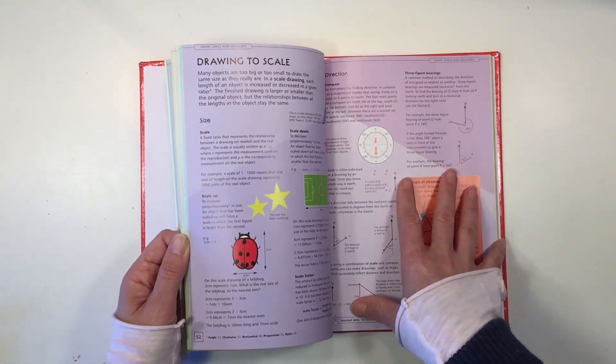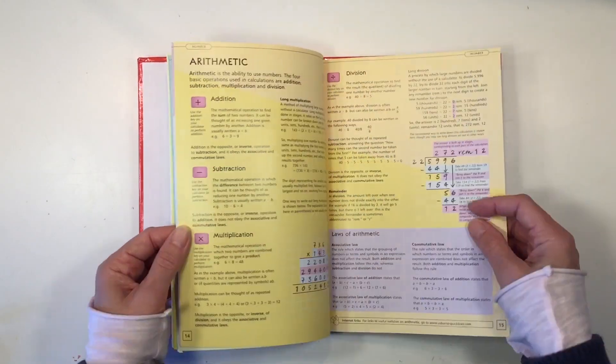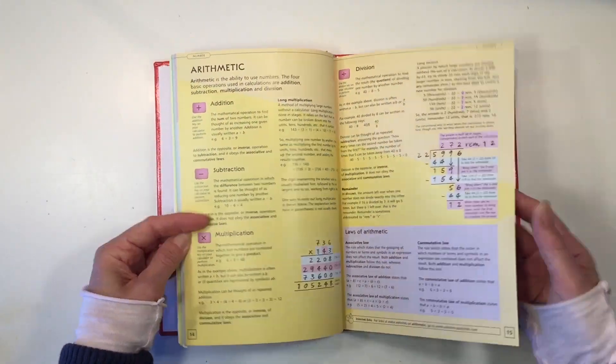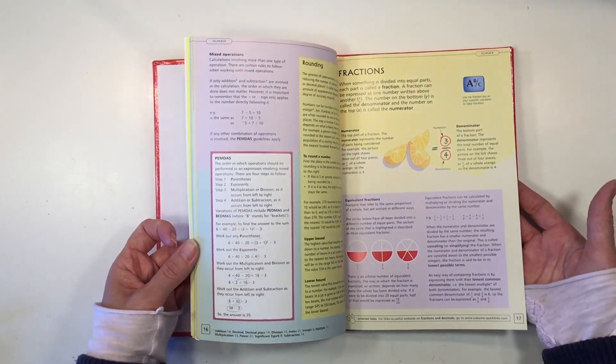So there's a lot on geometry and trigonometry and algebra, but there are also some sections on basic arithmetic: addition, subtraction, multiplication, division. There's decimals and there are fractions as well.